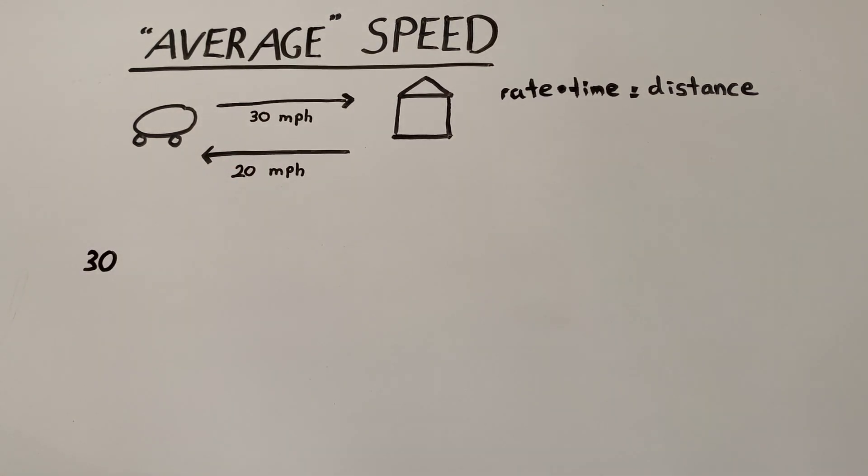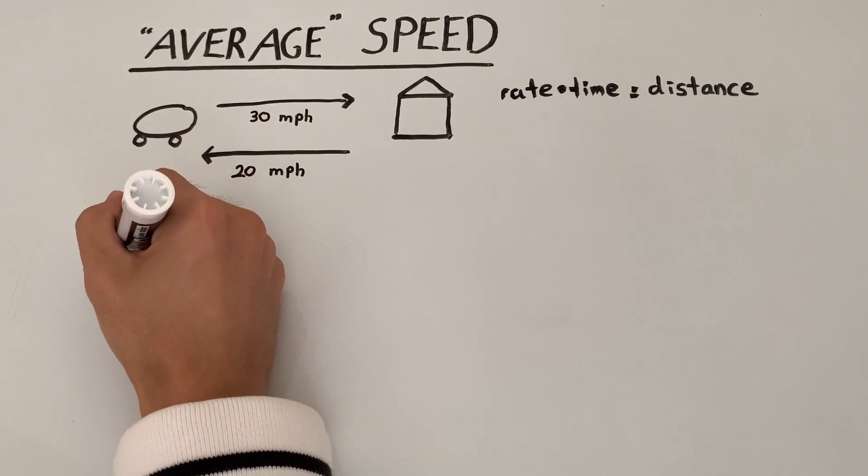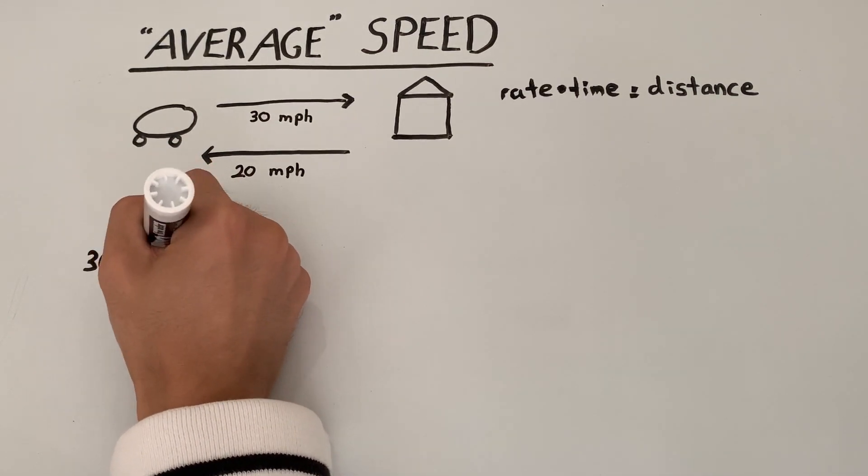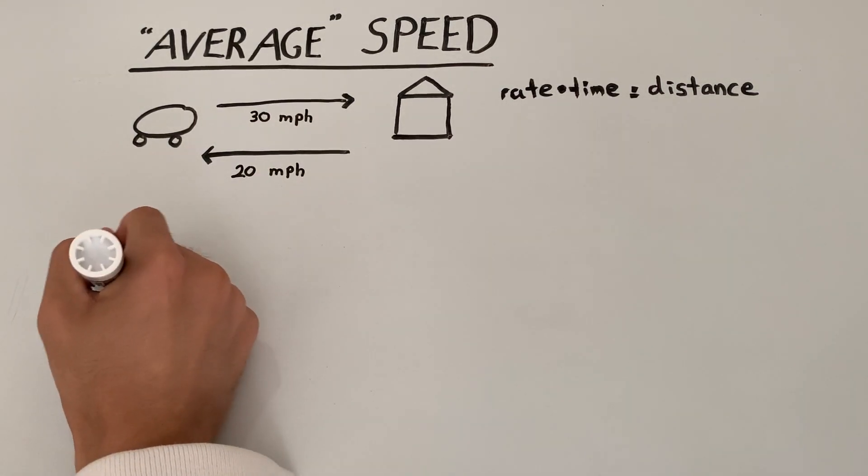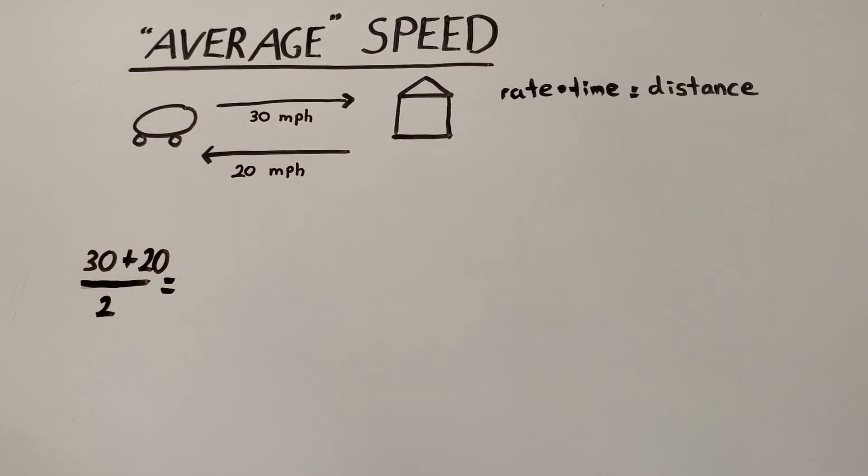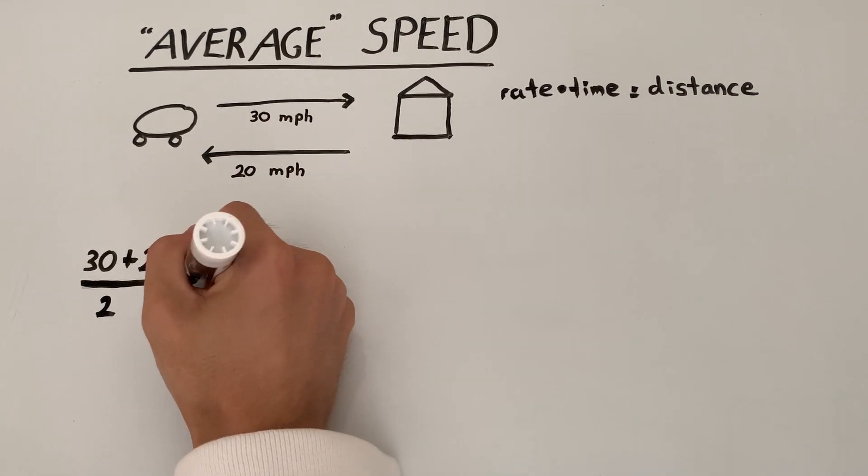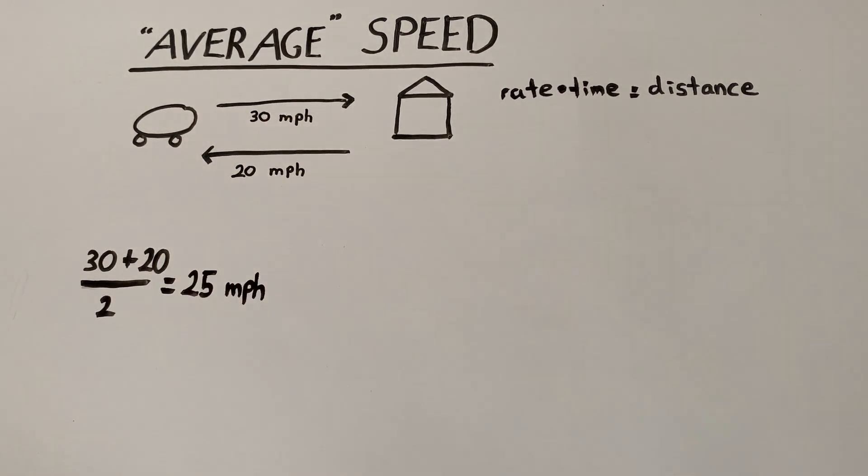30 miles per hour to Grandma's house, 20 miles per hour back. Divide that by 2. So that gives an average speed of 25 miles per hour. Very easy.